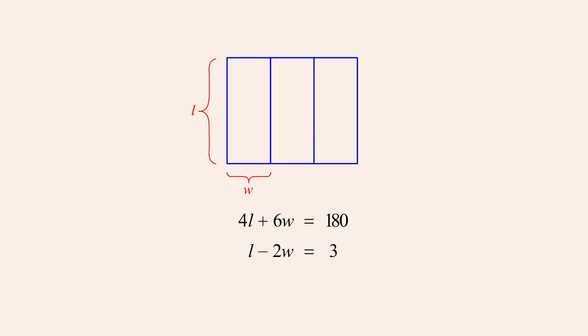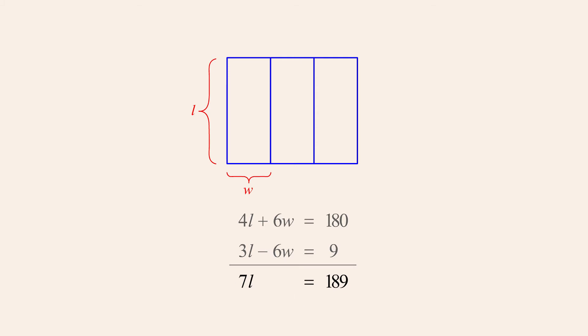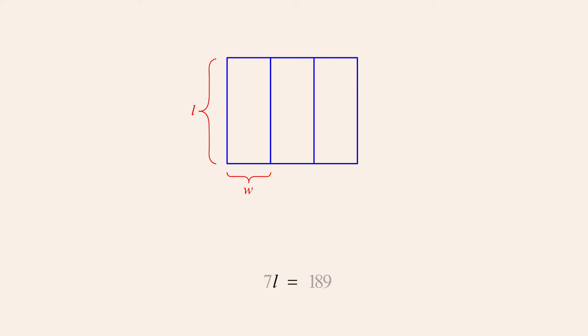We can now eliminate either variable l or w by choosing an appropriate multiplier for the second equation before adding the equations. If we choose to eliminate the variable w, we multiply the second equation by three. Now, when we add the equations, the w terms disappear, giving us the equation 7l equals 189, or dividing both sides by 7, l equals 27.